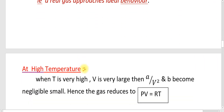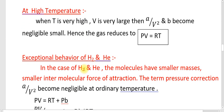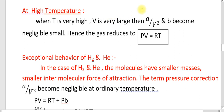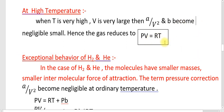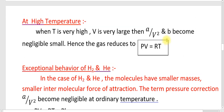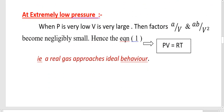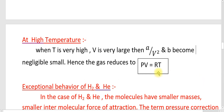At high temperature, when T is very large, V is very large, then A by V square and other correction terms become negligibly small compared to PV. Therefore, PV equals RT, or Z equals 1, and the real gas shows close relationship with the ideal gas.